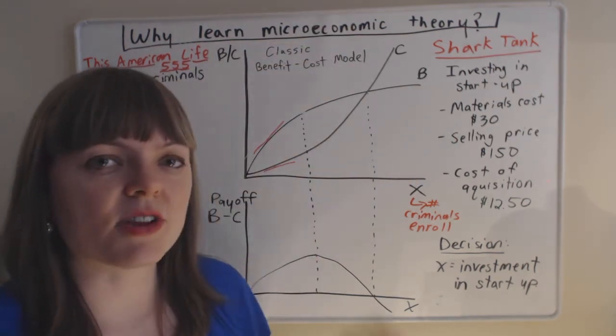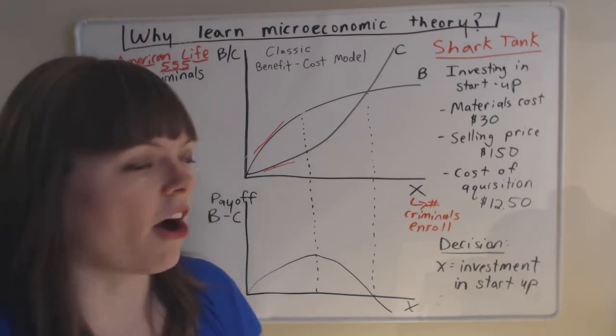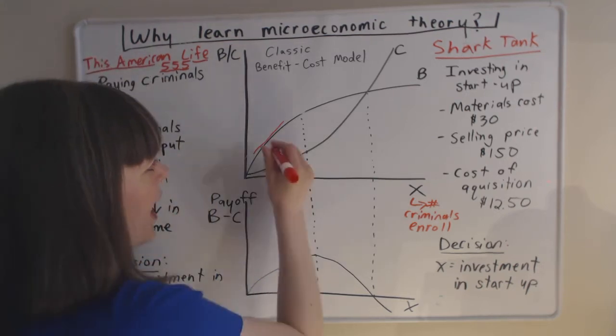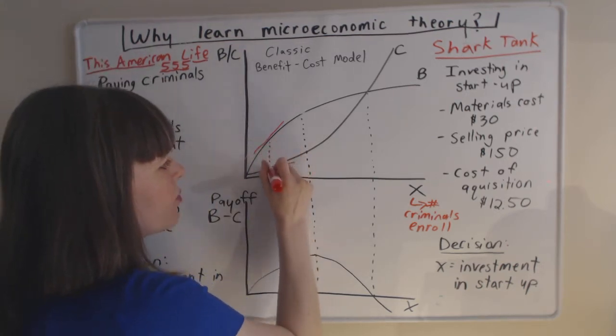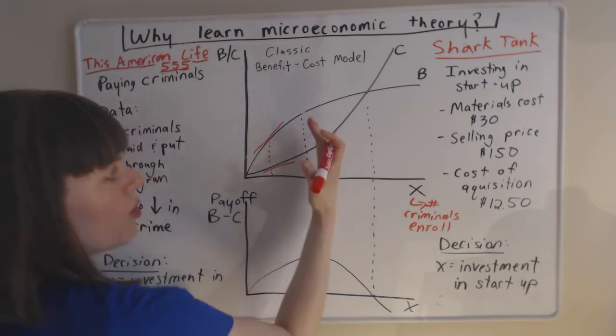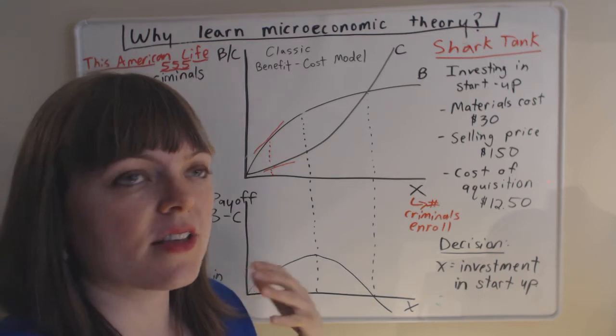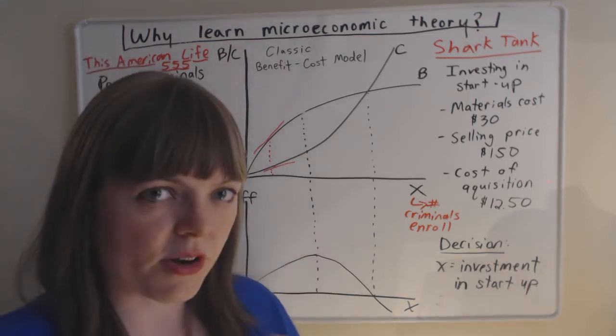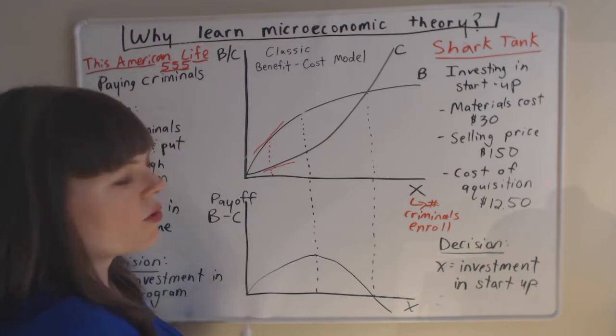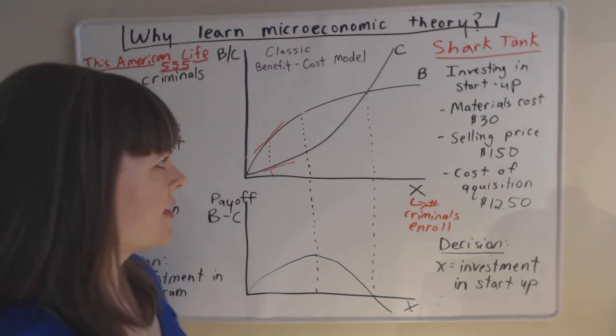But we know that these data trends will not continue like they are. So the question we actually have to ask ourselves after we look at the data, we know we're somewhere below this point. We know we want to invest more in the program because the benefit per dollar invested is so high. But we don't know how much more. And that's the big decision.